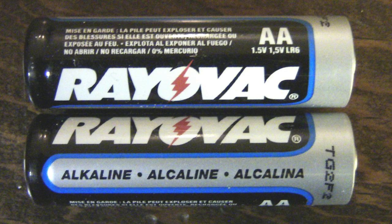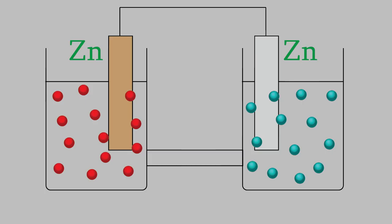For example, imagine we have this voltaic cell in which both the anode and the cathode are made of zinc. The solution on the left contains 0.200 molar zinc ions, and the solution on the right contains 0.150 molar zinc ions. And the temperature is 60.0 degrees Celsius.